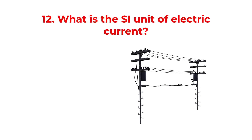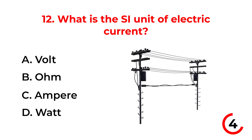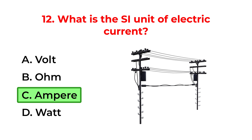What is the SI unit of electric current? A. Volt. B. Ohm. C. Ampere. D. Watt. The correct answer is option C: Ampere.